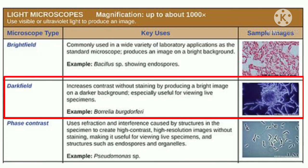The second type is the dark field microscope, which is similar to the bright field but differs in the type of condenser used — it uses a dark field condenser rather than a normal one. Dark field microscopes are useful for viewing live specimens and for observing organisms that cannot be observed with direct light. They produce images on a darker background, as seen in the sample image.